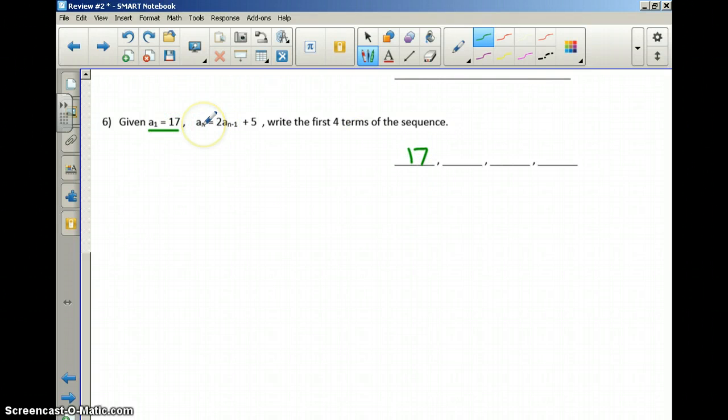the next term in the sequence, a_2, would come from 2 times, now this n minus 1, it means the term that came before it, which would be a_1. So that would be 2 times the 17 that I had gotten, plus 5. So if I do that, I get 39.